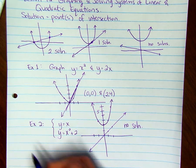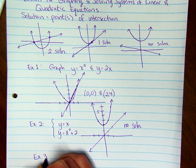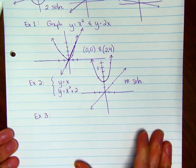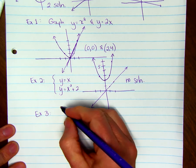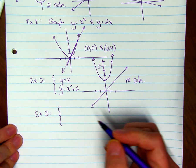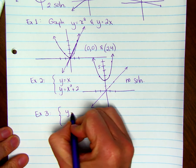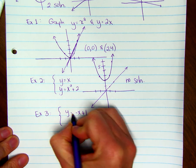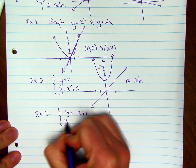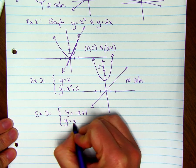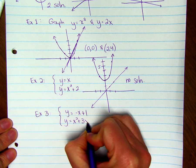Now there is a way to solve it using substitution. So if we had our system, we had y = -x + 1, and we had y = x² + 3x + 3.